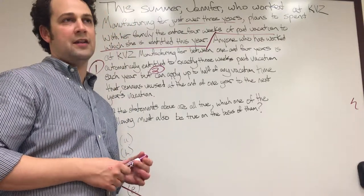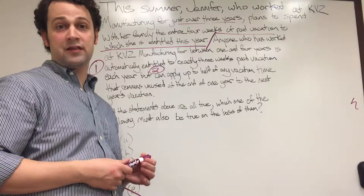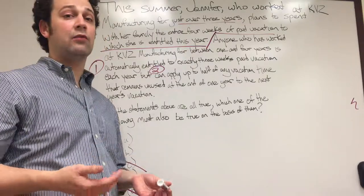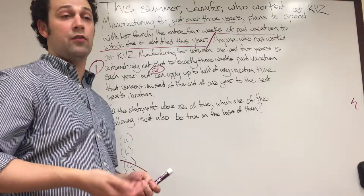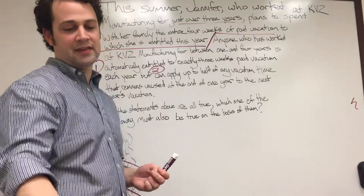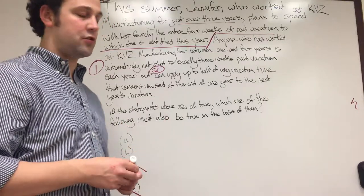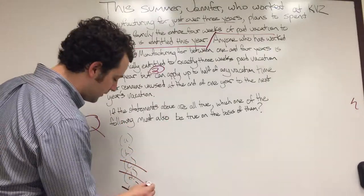If she used only one week and she was entitled to three plus three equals six weeks of vacation, she could theoretically roll forward all three weeks or three additional weeks of vacation time. So that does not, we can't say that that D is definitely true. So we're going to cross that out.